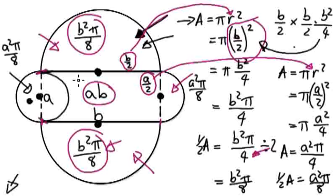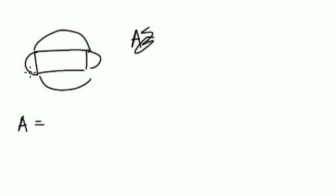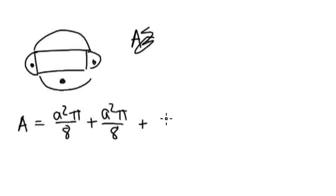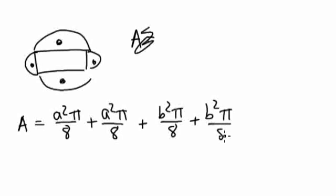So now we just need to add up all the components. So the total area is: A squared pi over 8, plus A squared pi over 8, plus B squared pi over 8, plus B squared pi over 8, plus AB.